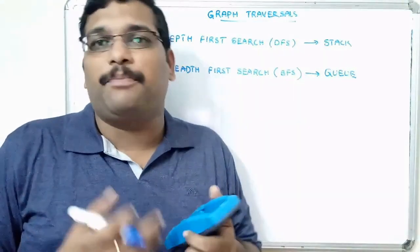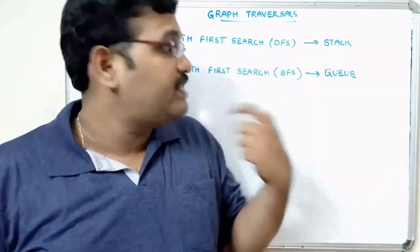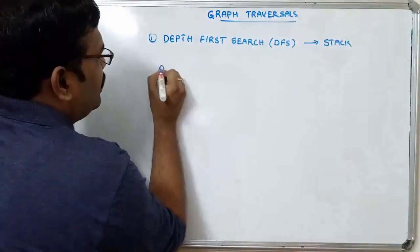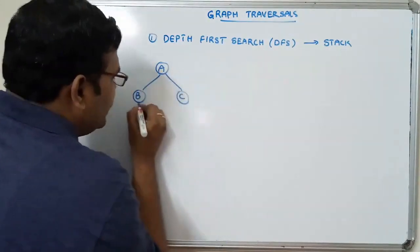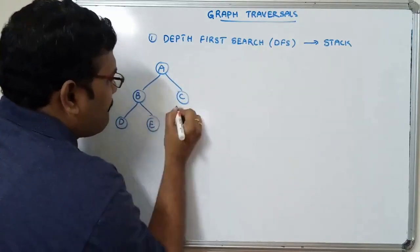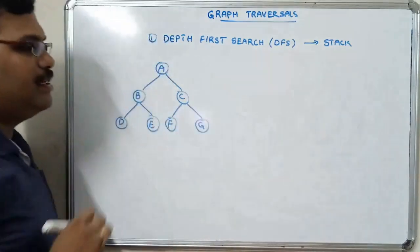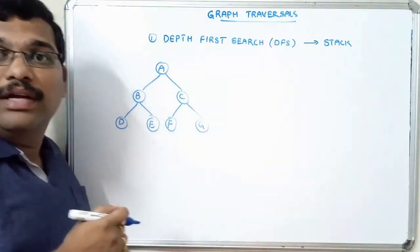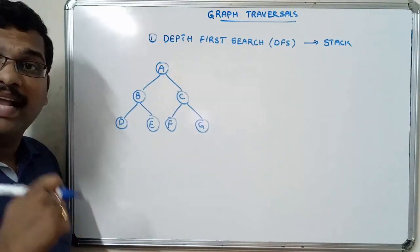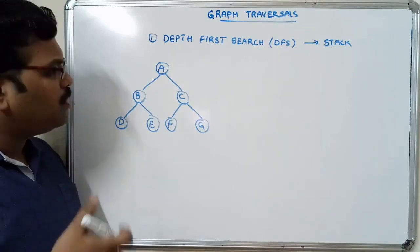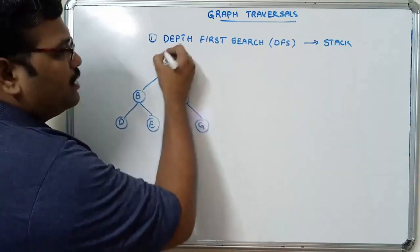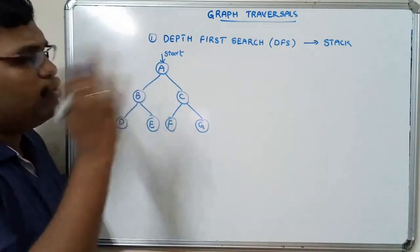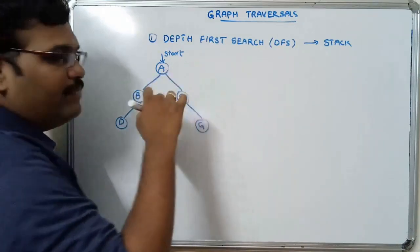Let us take an example and see how DFS and BFS work. Coming to DFS, let's take an example graph with nodes A, B, C, D, E, F, G. A graph is similar to a tree but a graph can contain cycles, that means loops. Now let us assume A as the start node - we can assume any node as start, but for simple understanding I'll take A.